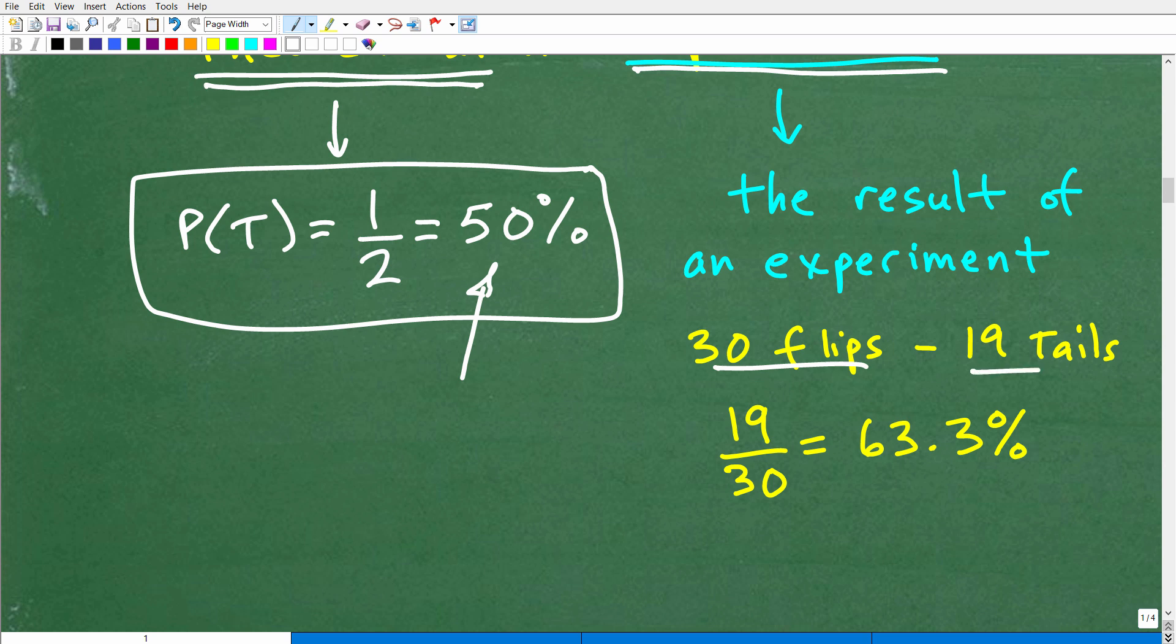And let's go ahead and take this 50% probability expectation, and let's put it to the test. Well, we do 30 flips, and guess what ends up happening? We get 19 of those flips come out to be tails. So let's go ahead and calculate the actual percentage, the chances of this coin flip coming out to be tails. That's going to be 19 out of 30 times. So 63.3%.